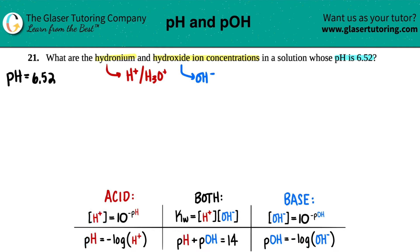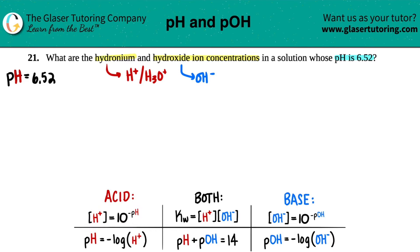They're looking for the H+ concentration and the OH-. Since pH is the acidic component of an acid or base, it makes sense that I can find the H+ concentration by just doing 10 to the negative pH — that's one of your formulas. So the first thing we're going to find is the hydronium concentration. H+ equals 10 to the negative pH.